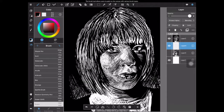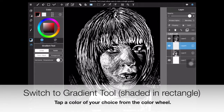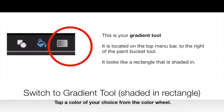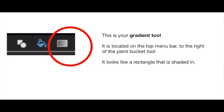Then we're going to use the gradient tool. First, locate the gradient tool, which is on the top menu bar to the right of the paint bucket tool. It looks like a rectangle that is shaded in.